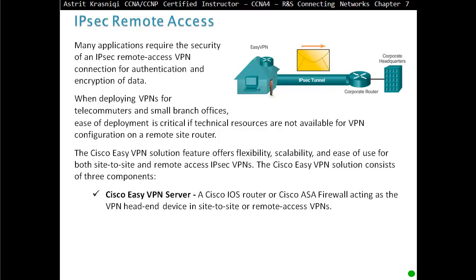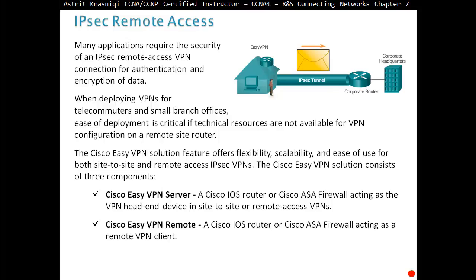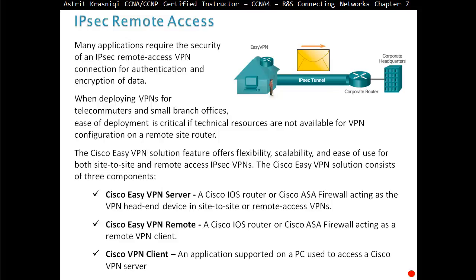The Cisco Easy VPN solution consists of three components: the Cisco Easy VPN Server, which is a Cisco IOS router or Cisco ASA firewall acting as a VPN headend device in a site-to-site or remote access VPN; the Cisco Easy VPN Remote, a Cisco IOS router or Cisco ASA firewall acting as a remote VPN; and the Cisco VPN Client, an application on a PC used to access a Cisco VPN server. To have an IPSec VPN, we need a VPN client with an application installed, a VPN-capable router on the remote end, and a VPN server at headquarters.